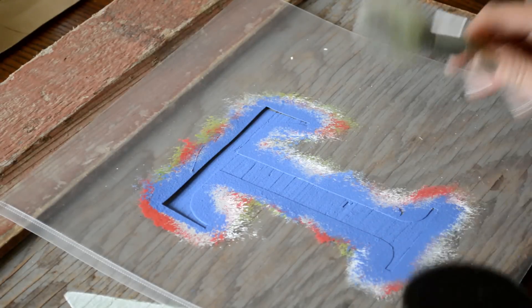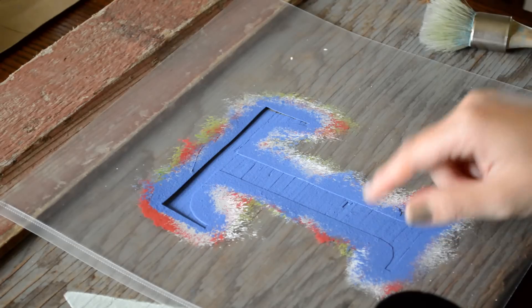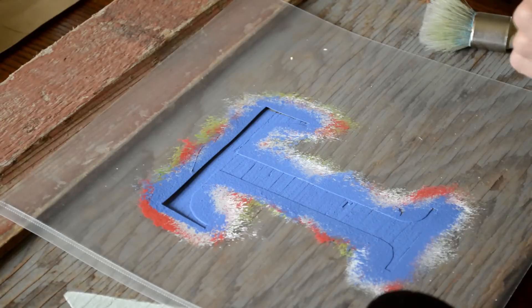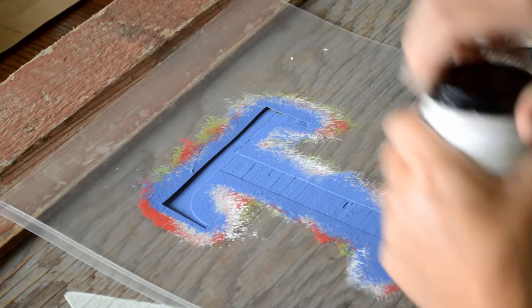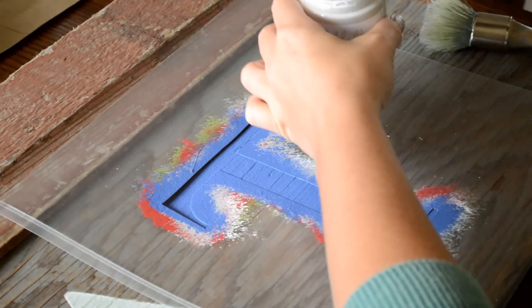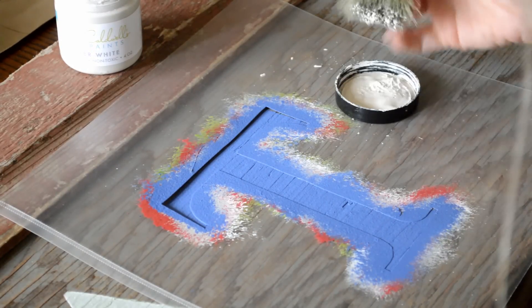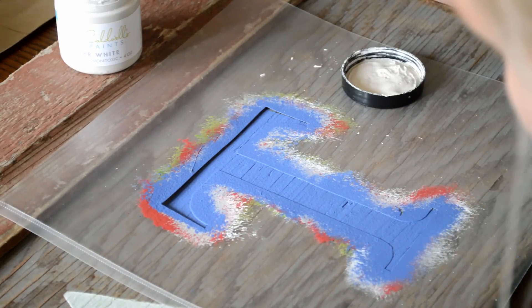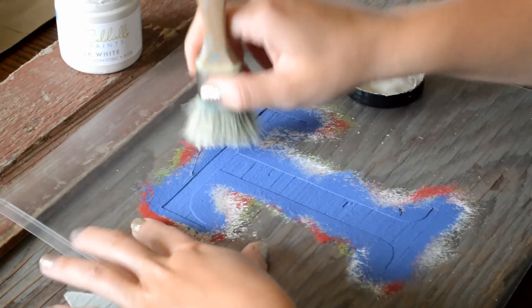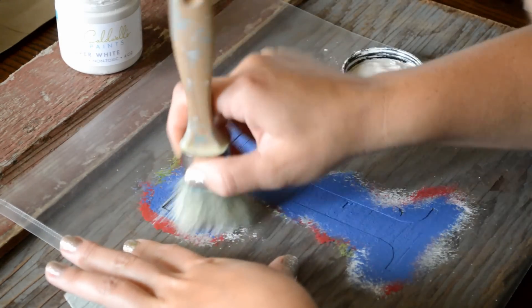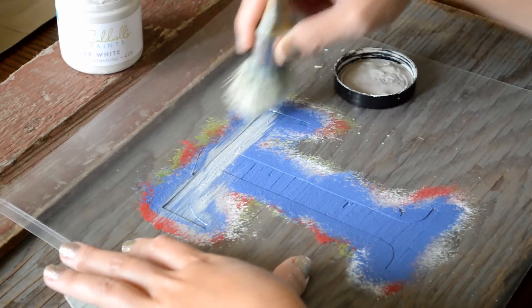It's going to go on kind of translucent. The reason I'm adding this over the last color of my letter is because I want to create an aged look about it, and this is a great way to get that. So, this is an optional step. You don't have to do it, but I just think it looks really cool. Now this one, I'm not going to dab it like I did all the other colors. I'm actually just going to kind of wipe it on, and I'll put it thicker in some places than others.